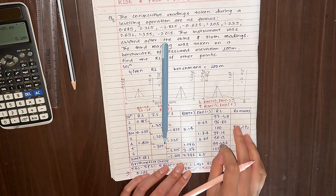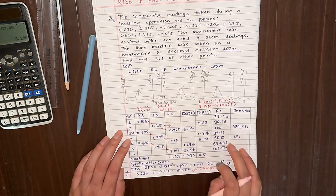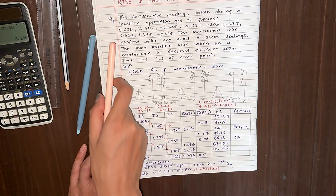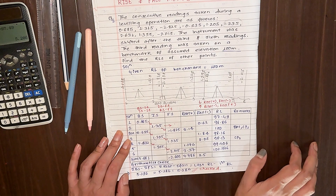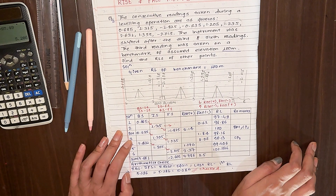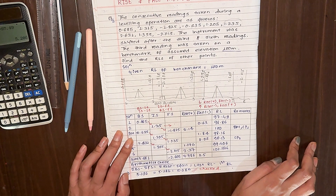All calculations are done and the RLs calculated are correct. This is all for today's video. We will solve a numerical using the height of collimation method in another video. Thank you so much for watching, and please like and subscribe.